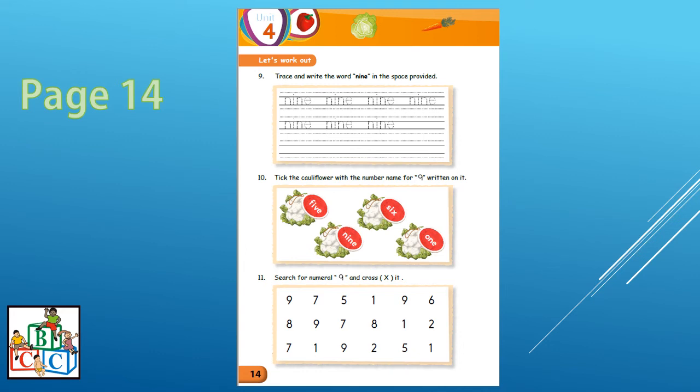So here we are going to search the number name for 9 which is written on the cauliflower. So let us see what are the number names. There we have F-I-V-E five, S-I-X six, N-I-N-E nine, and O-N-E one. So how many number name 9 do we have? Only 1. Very good.